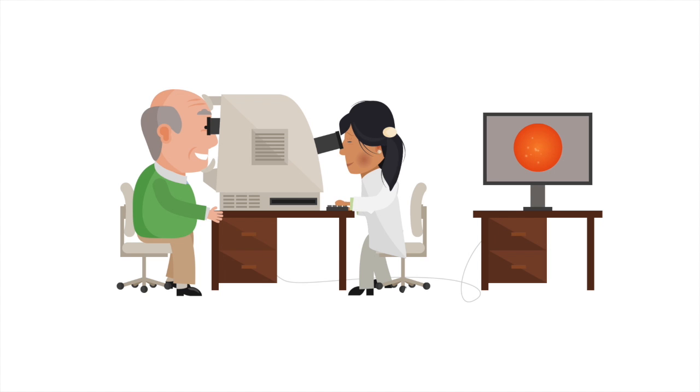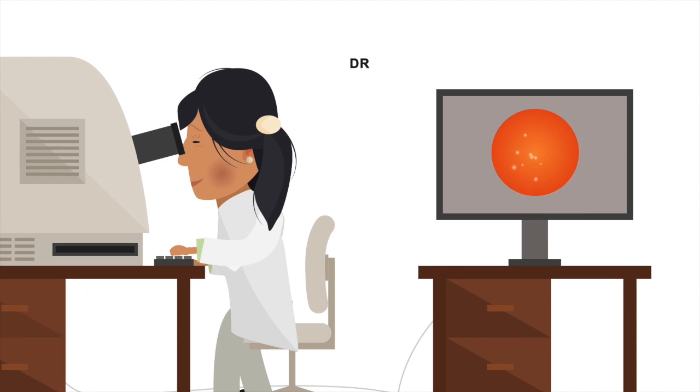When your optometrist or ophthalmologist looks in the back of your eye, they can identify these drusen, or yellow spots, the first signs of macular degeneration.